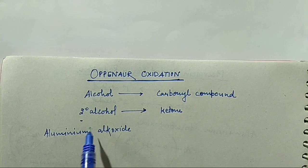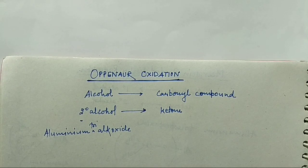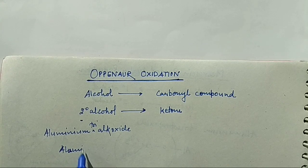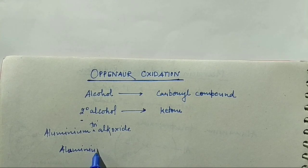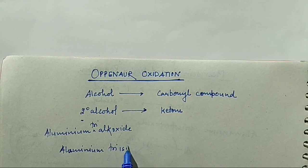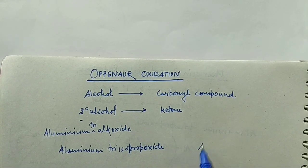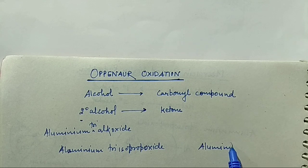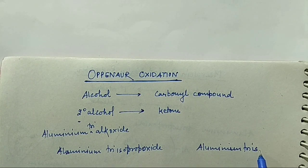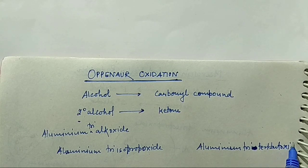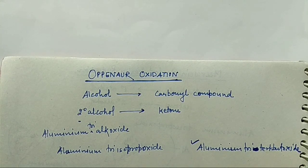Actually Aluminium Tri-Alkoxide, because the valency of Aluminium is 3. So we can use Aluminium Tri-Isopropoxide or Aluminium Tri-Tertiary Butoxide. In MPV Reduction, we could not use tertiary butoxide because it does not have a hydride.